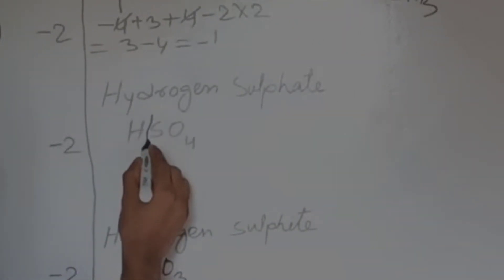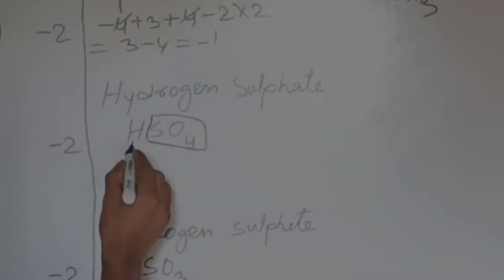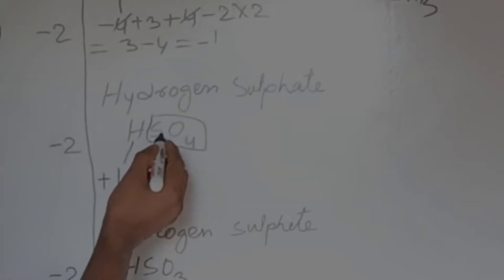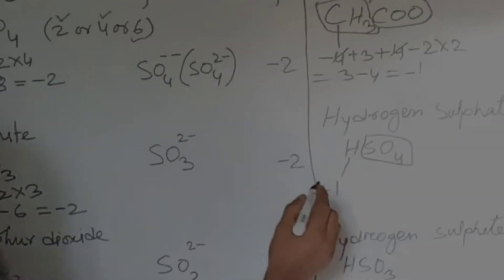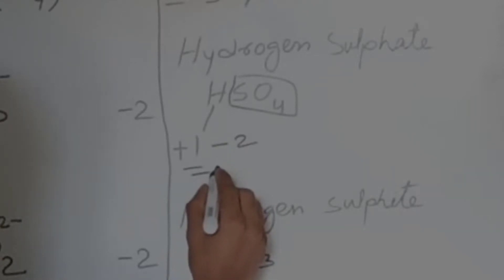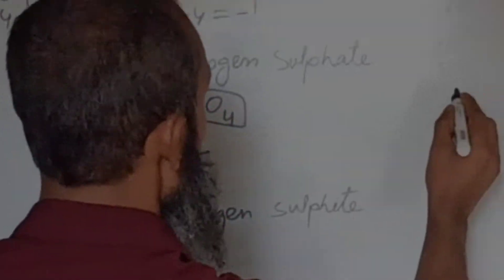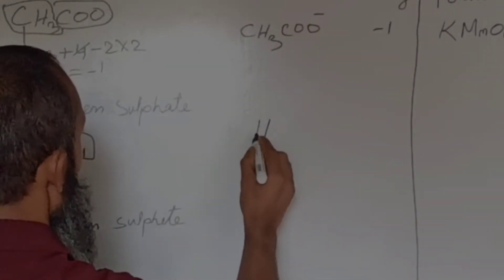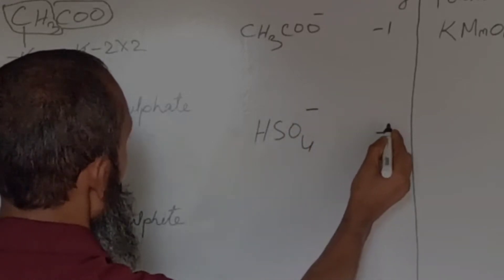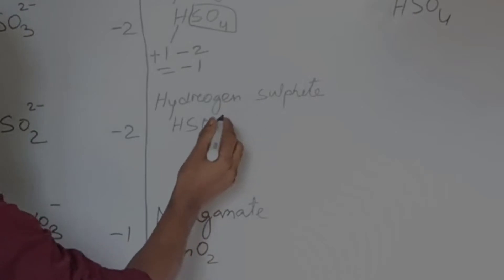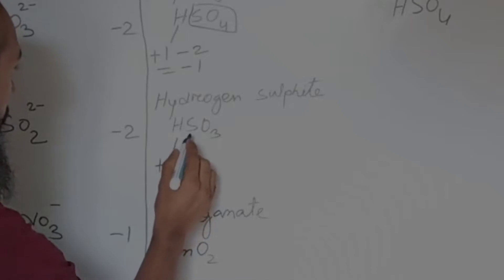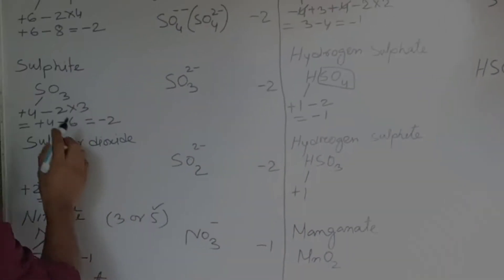Now hydrogen sulfate — there are two groups. Hydrogen has valency 1 and is electropositive. We have already found the valency of sulfate as minus 2. So plus 1 minus 2 gives valency minus 1. Its symbol is HSO4 1-minus.